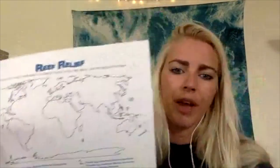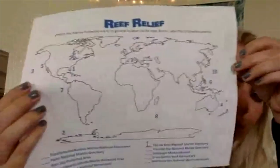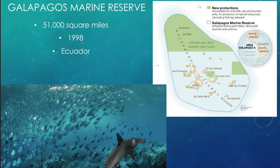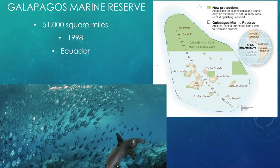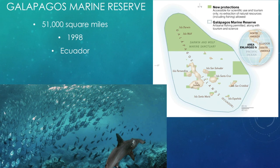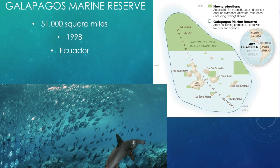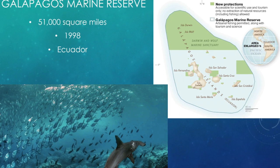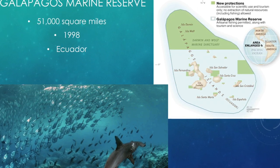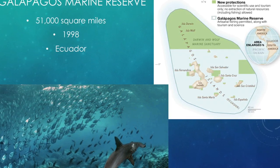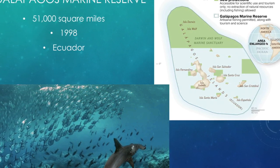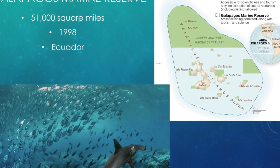Then we have the Galapagos Marine Reserve. It is 51,000 square miles and was created in 1998. It is near Ecuador — you have to fly into Ecuador to get to the Galapagos. It's a very beautiful place on my bucket list. Friends who've been there say it's gorgeous, with so many amazing things and beautiful wildlife.